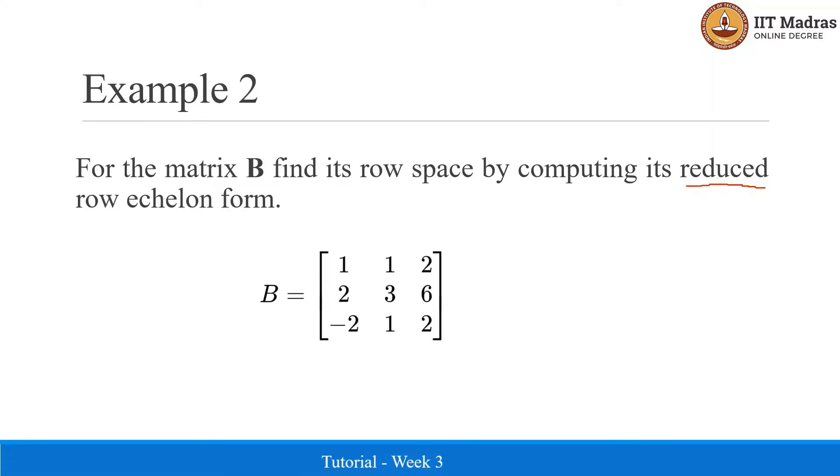This reduced row echelon form is a simplified form of the row echelon form with one in the pivot elements of the columns and the other elements in the pivot columns equal to zero.